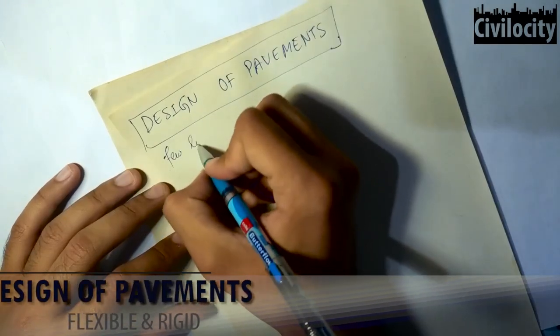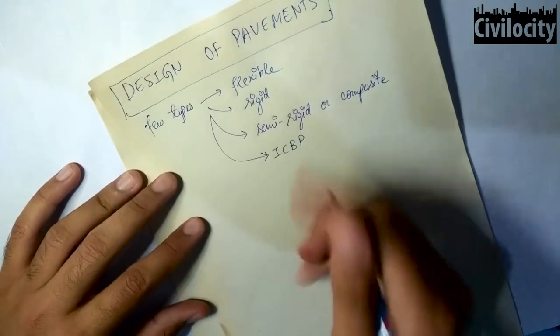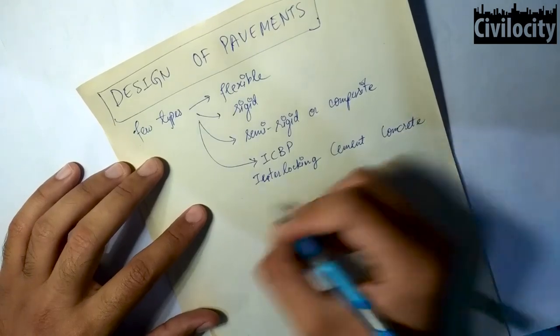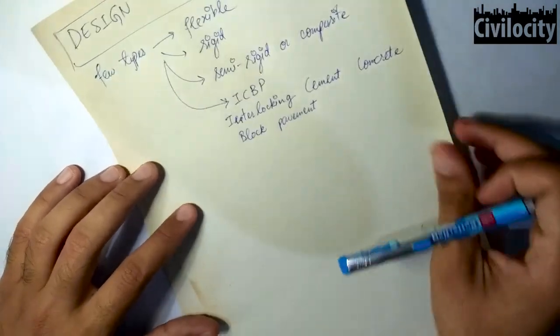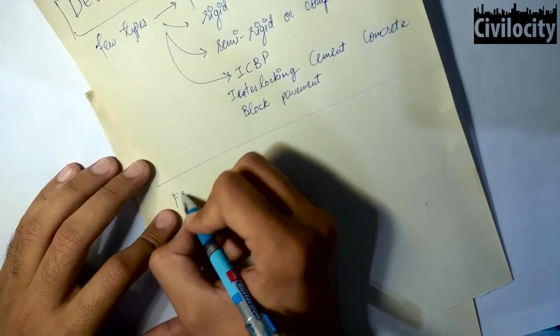So pavements are a few types: flexible, rigid, semi-rigid or composite, or ICBP that is interlocking cement concrete block pavement. But in our syllabus only flexible and rigid pavements are there, so we will be talking about flexible and rigid pavements.